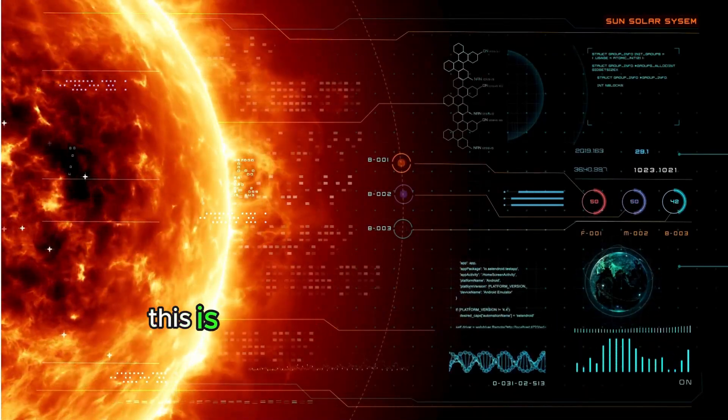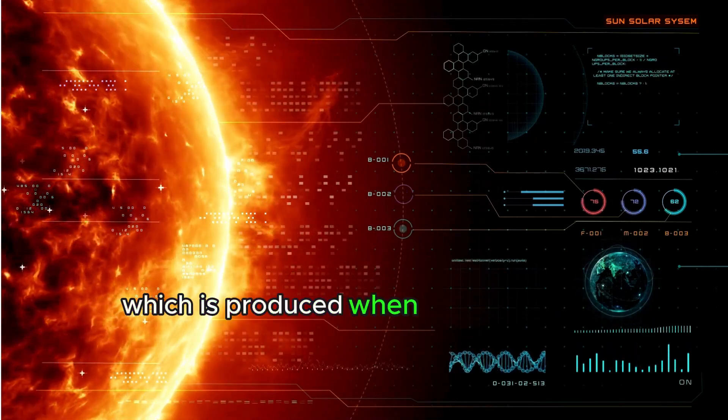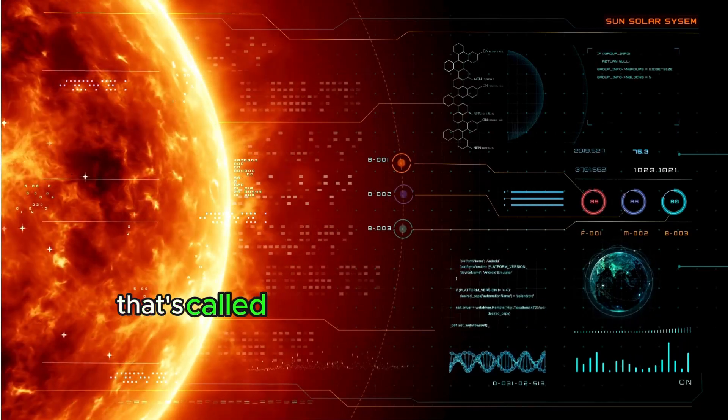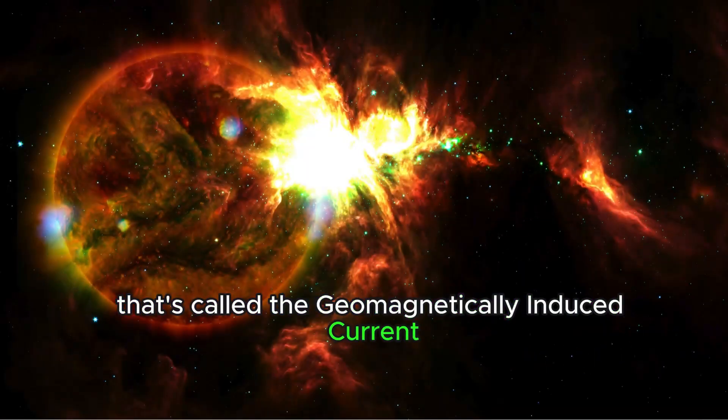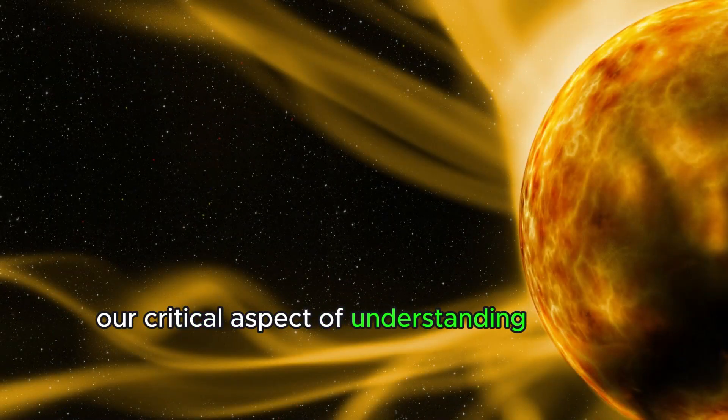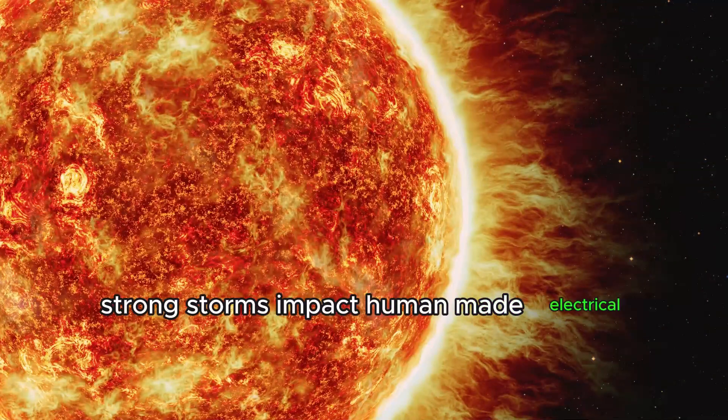This is some interesting phenomena which is produced when solar storms happen. It's called geomagnetically induced currents, also called GICs, a critical aspect of understanding how solar storms impact human-made electrical systems.